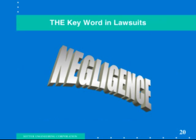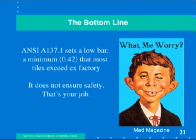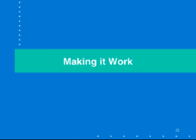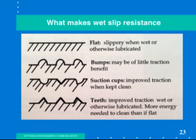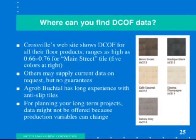The bottom line is that ANSI A137.1 sets a very low bar for safety. Getting a 0.42 on this test does not ensure safety at all — that's your job. Wet slip resistance requires either microscopic pores or suction cups in the surface, or sharp peaks on top of it. Sometimes you can find slip test data on tile boxes or from the manufacturer, but typically you will not find any reliable slip test data.